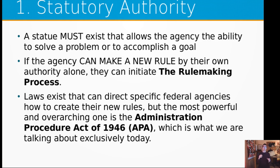Laws exist that can also direct federal agencies how to create their rules. But the most powerful and overarching rule — the procedure we're talking about — is the Administration Procedure Act of 1946. Other statutes which authorize the ability for an agency to do any type of new rulemaking can have other steps included in them, but most, if not all, stick to this basic formula. We will talk about where exceptions may come up, but we're not going to talk about anything super specific at the department or agency level.